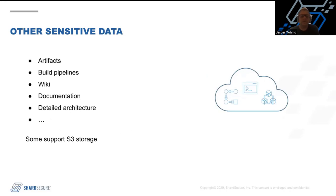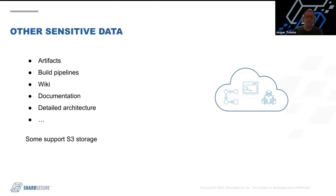Source code is probably not the only data you want to protect. You have artifacts where you build all the software together as a bundle, you have pipelines, and you probably have other data sets like wiki documents, documentation with sensitive information that should only be kept for the dev team, detailed architecture documents, and databases with information or logging. There are a lot of different places, and source code protection is just one of the use cases.